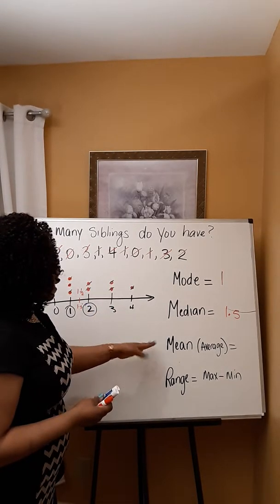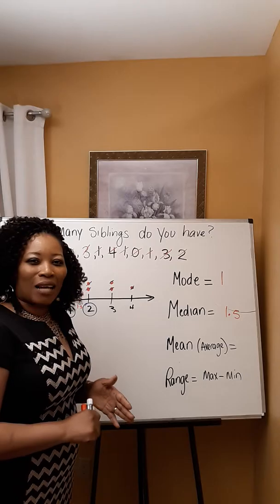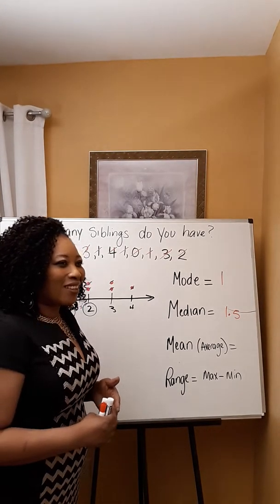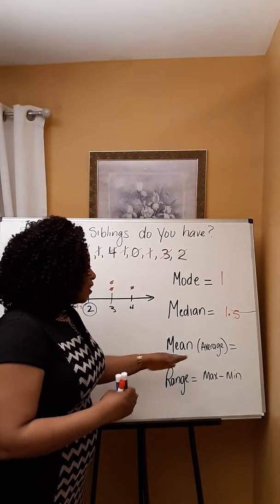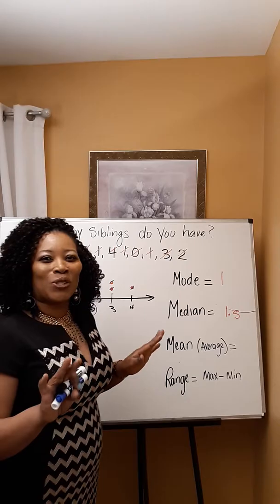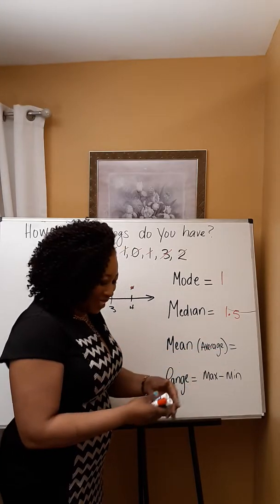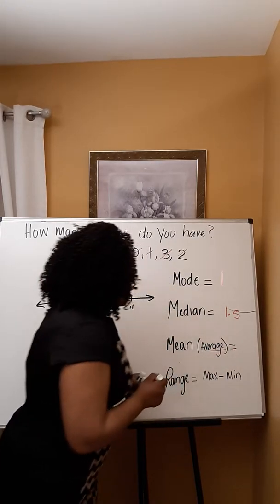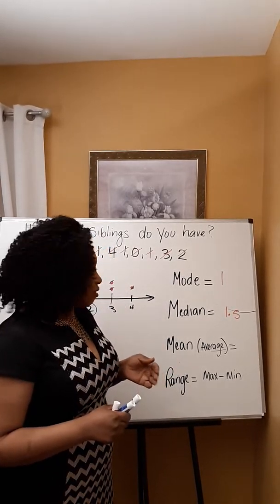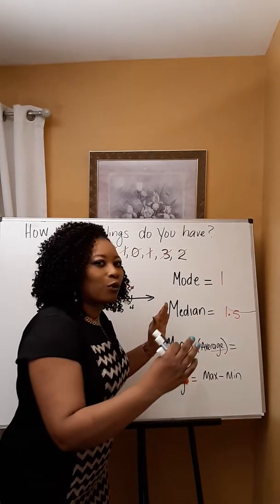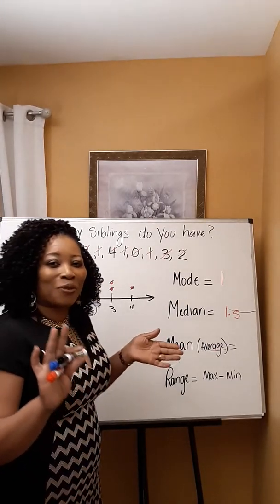The next number we're going to identify is our mean. I label it as 'average' because most students learn to find the average, but on tests the word that shows up is 'mean,' and a lot of students forget that mean means average. A memory trick: inside the word 'average' there's the word 'rage' — R-A-G-E — and people who are mean usually have some rage. So that's a way to remember that mean equals average.